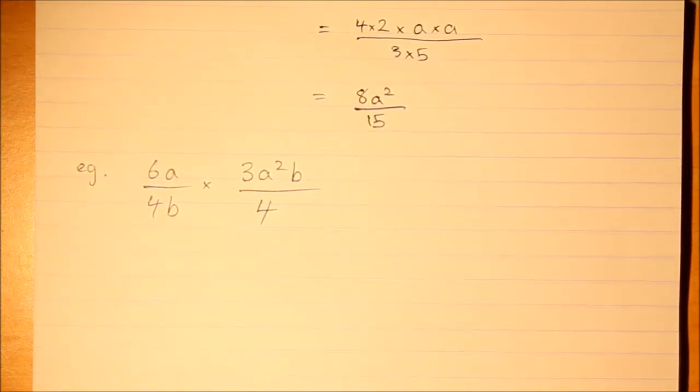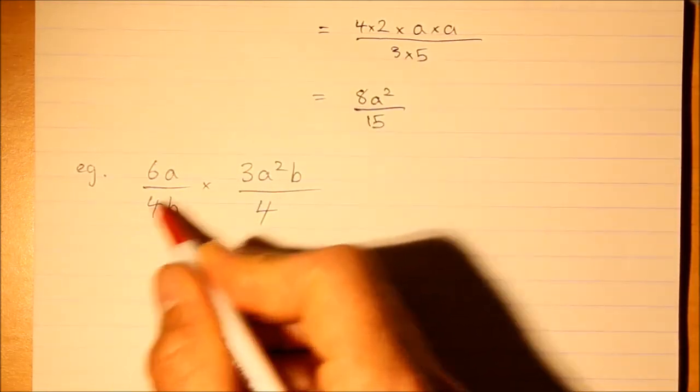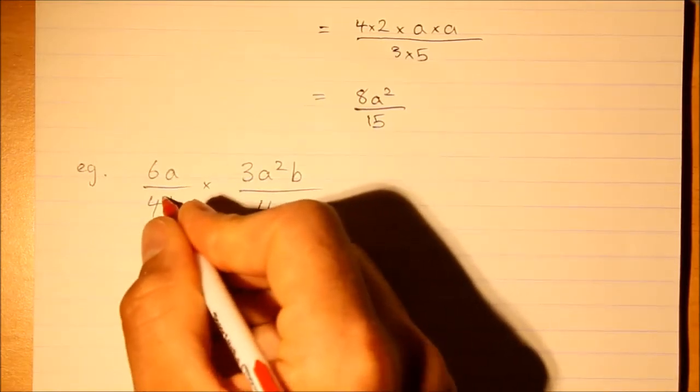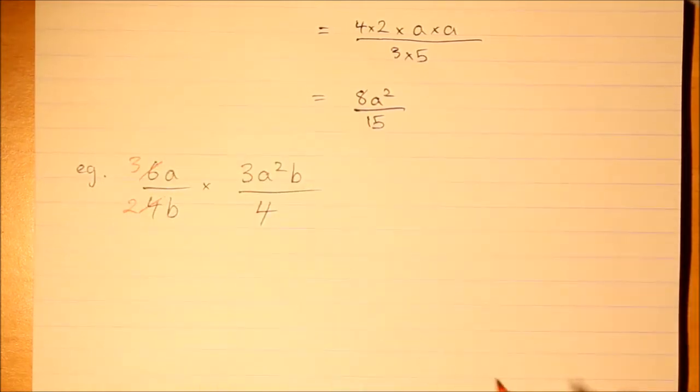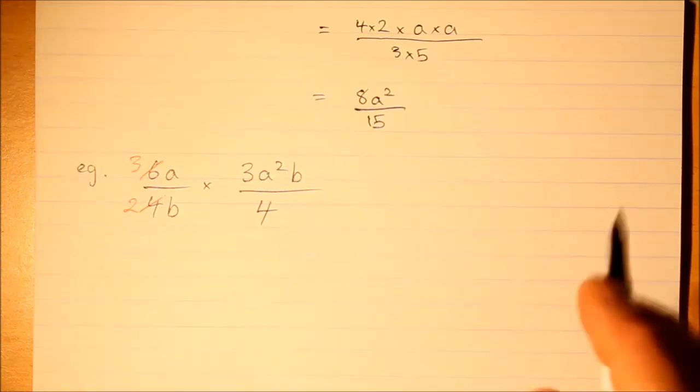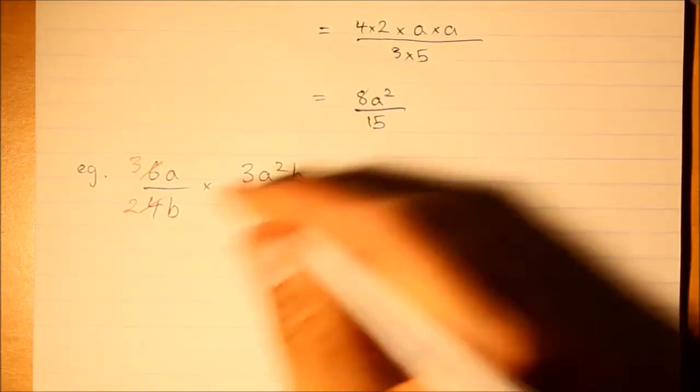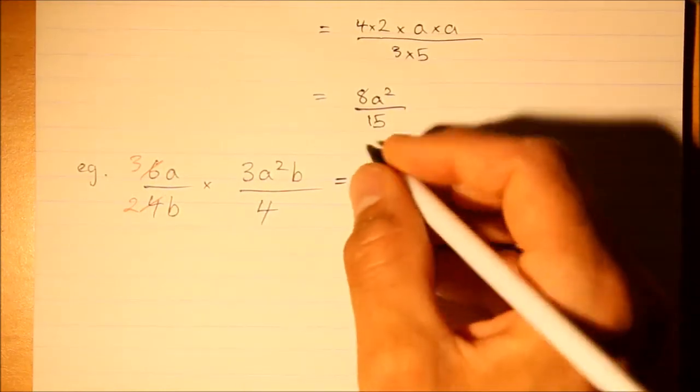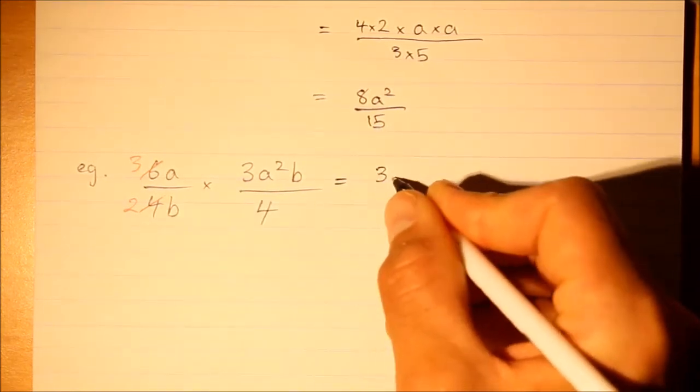That way you're working with smaller numbers. Smaller numbers are easier to multiply, so we can simplify this fraction. It doesn't matter which way you do it, but let's say two goes into that twice and two goes into that three times. This is going to give us easier multiplications and it will mean we don't need to simplify a larger fraction later.